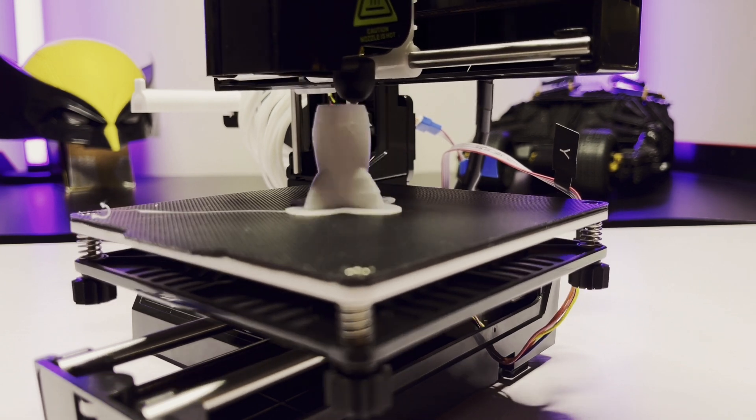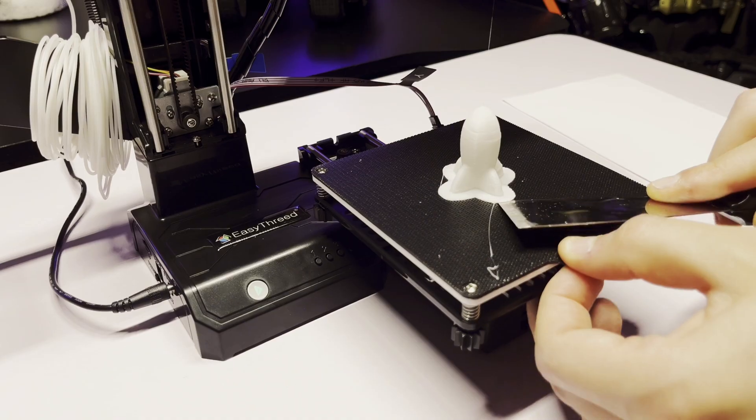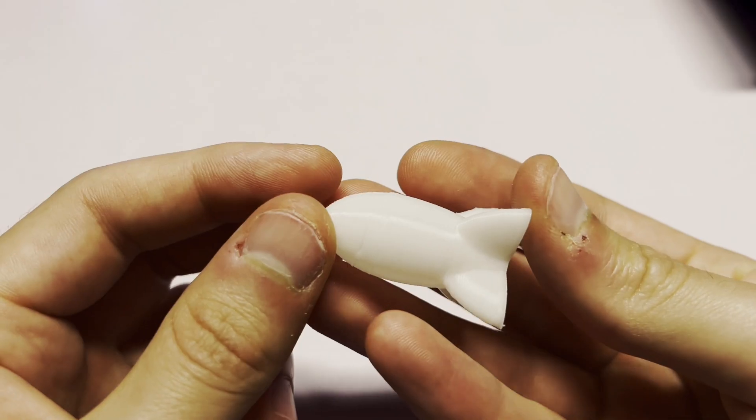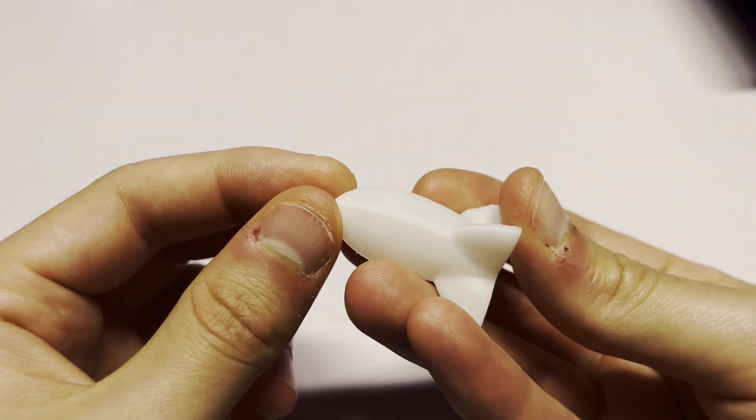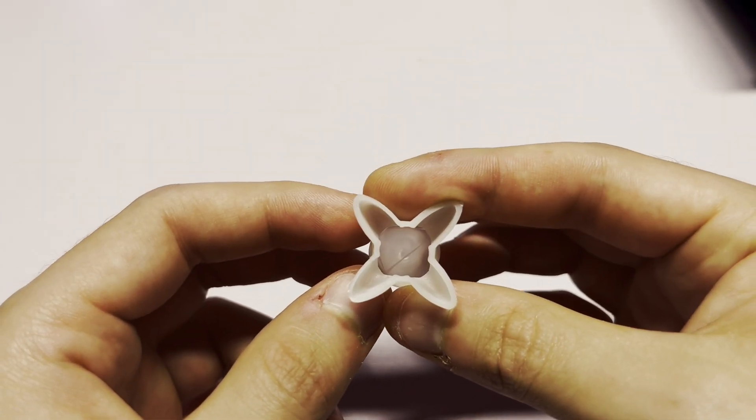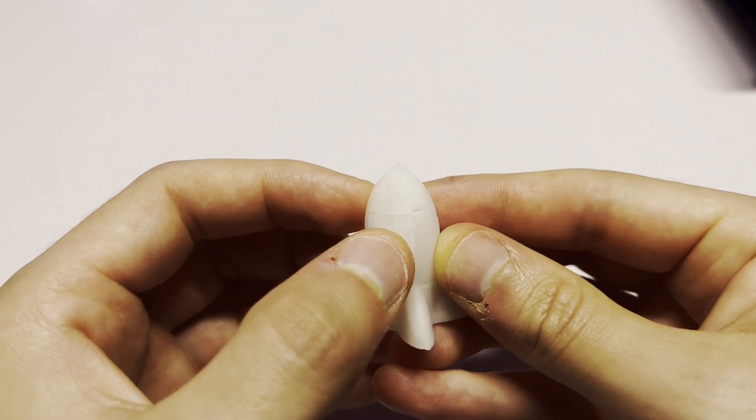I wasn't sure what this was printing at first and thought it might be a star, but it turns out it was a rocket chip. The raft came off the build plate super easy and you can see a lot of the layer lines, but for an $80 printer, I don't think it's too bad. I'm actually kind of impressed with how easy this thing was to set up and how well it prints right out of the box.